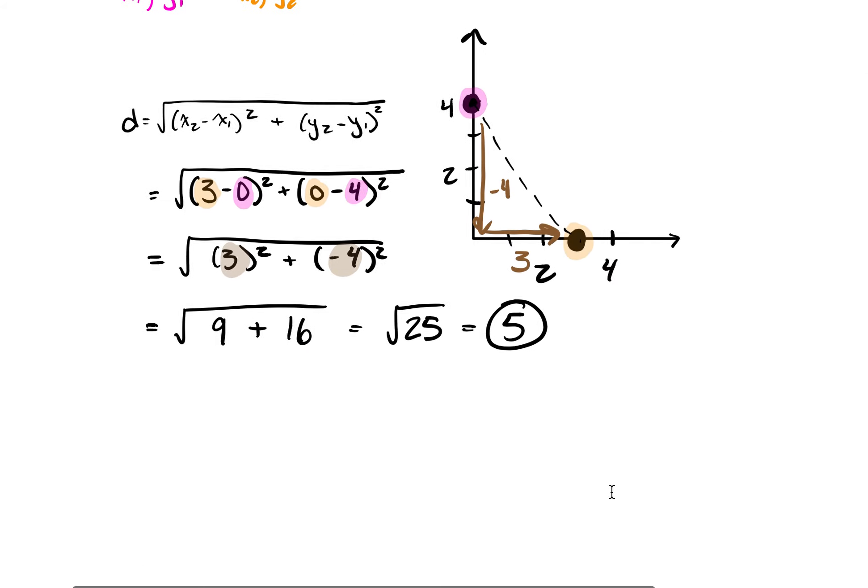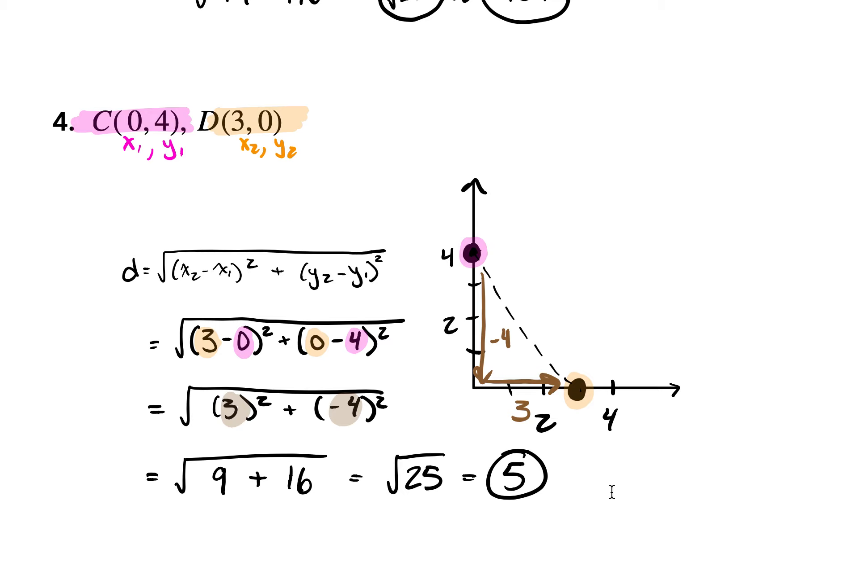For our last example, is really basic, actually. So that's fun. We have 0, 4, and 3, 0. So those lines lie straight on our axes. Go over 0, up 4. It's our pink guy. And then over 3, up 0, is our orange guy. So now let's plug our x1, y1, x2, y2 into our formula. That would give us 3 minus 0 squared plus 0 minus 4 squared. So we have 3 squared plus negative 4 squared. Notice we go over 3, down 4. That's our change. That's how we're finding our distance. So that gives us the square root of 9 plus 16, which is the square root of 25, which is 5.